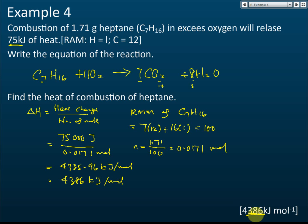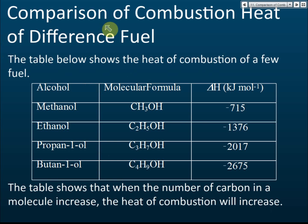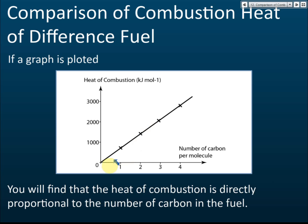Now for the comparison of heats of combustion of different fuels — we compare alcohols: methanol (1 carbon), ethanol (2 carbons), propanol (3 carbons), and butanol (4 carbons). If we plot heat of combustion against number of carbons, we get a straight line through the origin. This means heat of combustion is directly proportional to the number of carbon atoms in the alcohol.